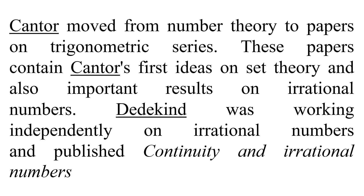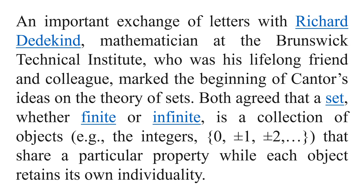Cantor moved from number theory to papers on trigonometric theories. These papers contain Cantor's first ideas on set theory and also important results on irrational numbers. Dedekind was working independently on irrational numbers and published continuity and irrational numbers. Their important exchange of letters marked the beginning of Cantor's ideas on the theory of sets. They both agreed that a set, whether finite or infinite, is a collection of objects that share a particular property while each object retains its own individuality.